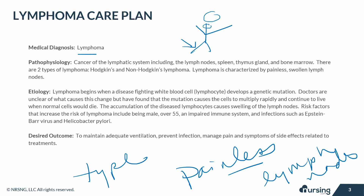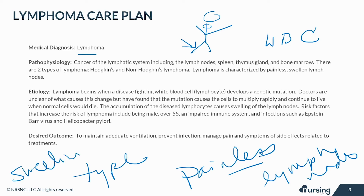Lymphoma begins when a disease-fighting white blood cell or lymphocyte develops a genetic mutation. Doctors are unclear of what causes this change, but have found that the mutation causes the cells to multiply rapidly and continue to live when a normal cell would die. The accumulation of these diseased lymphocytes causes the swelling of the lymph nodes.